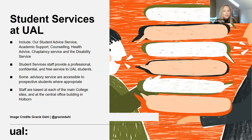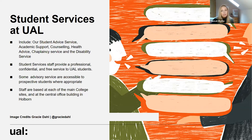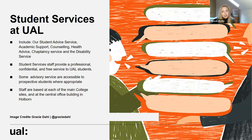In terms of on-site support, we have UAL student services. These include our student advisory service covering finance, immigration specialists, academic support, counselling, health advice, multi-faith chaplaincy and disability support. All of these are staffed on-site at Camberwell, but we also have a central hub in High Holborn in central London. All of these services are completely confidential and free of charge to our students.